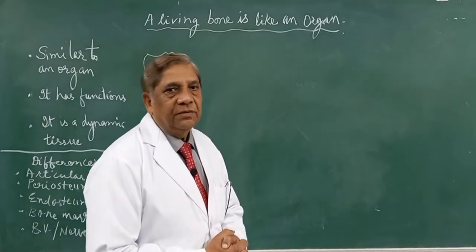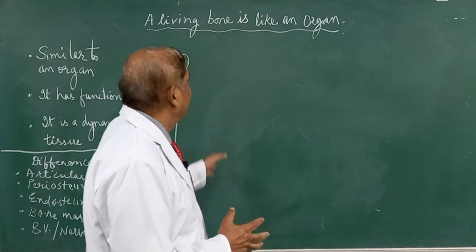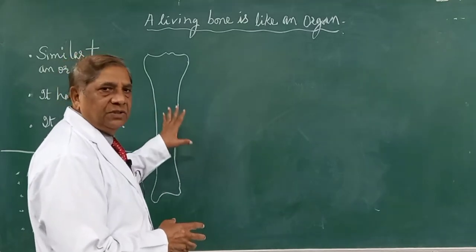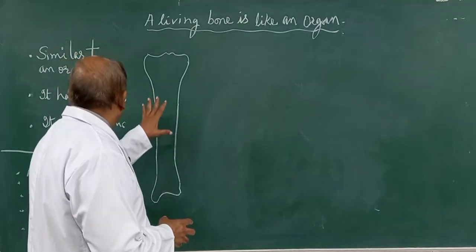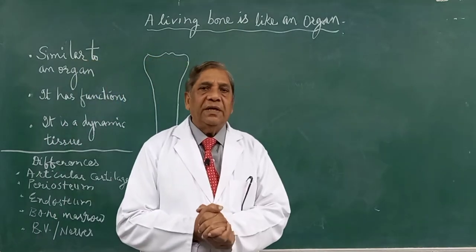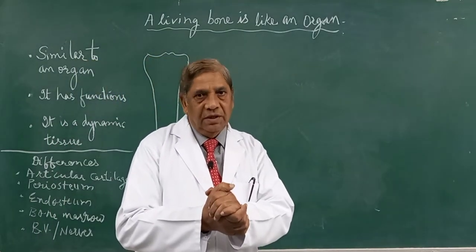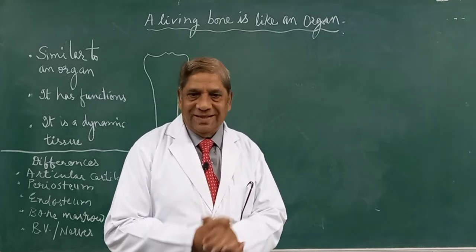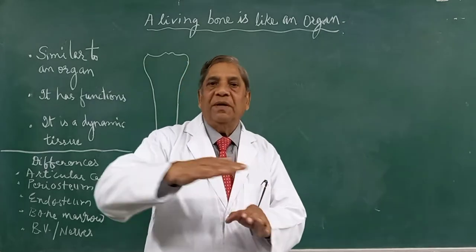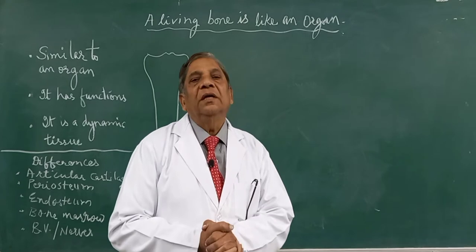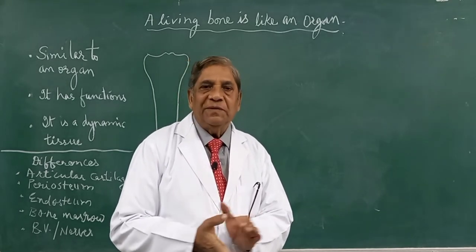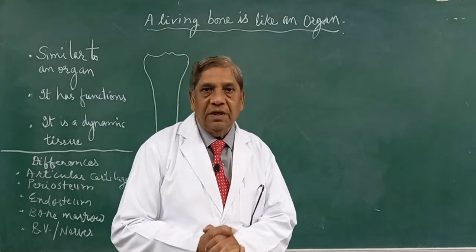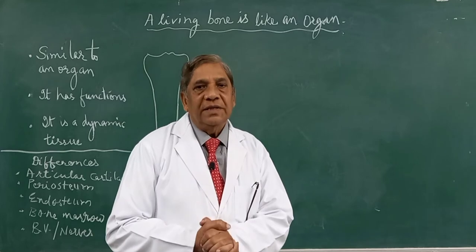Let us see how bone behaves like an organ. If you take the example of the small intestine, which you have studied in your lower classes — it is made up of multiple layers. If you cut a transverse section, the outermost layer is the serosa, which is an example of the basic connective tissue — the dense connective tissue.